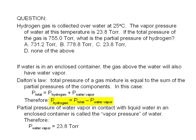The partial pressure of water vapor in contact with liquid water in an enclosed container is called the vapor pressure of water, which is given in the problem as 23.8 Torr. Therefore, the partial pressure of water vapor is 23.8 Torr.